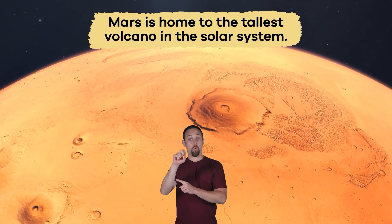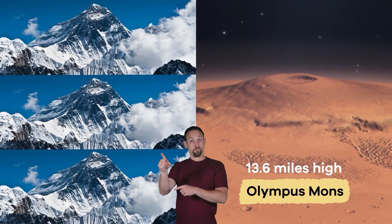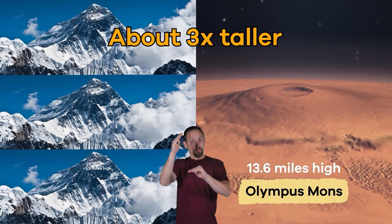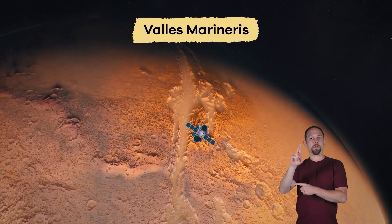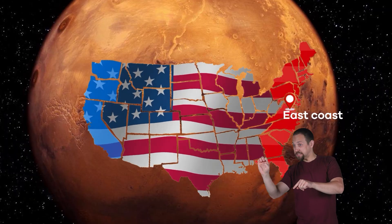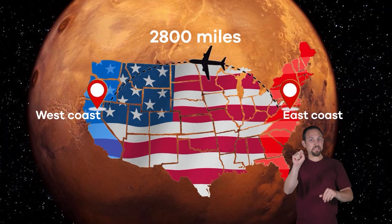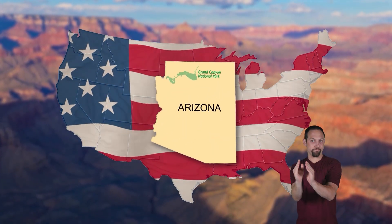Mars is home to the tallest volcano in the solar system. It is called Olympus Mons, and it is about three times taller than Mount Everest. Another notable geographic feature is Valles Marineris, which is the largest canyon in the solar system. It is so large that if it were on Earth, it would stretch from the east coast of the United States all the way to the west coast. That makes the Grand Canyon look pretty tiny in comparison.